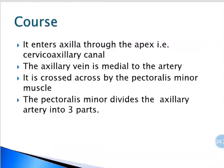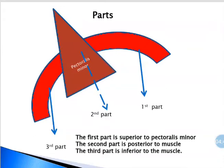The axillary vein is medial to the artery throughout its course. This artery is crossed by the pectoralis minor muscle, and because of this crossing, the pectoralis minor divides the axillary artery into three parts. The first part is superior to the pectoralis minor muscle, the second part is posterior to the muscle, and the third part is inferior to the muscle.